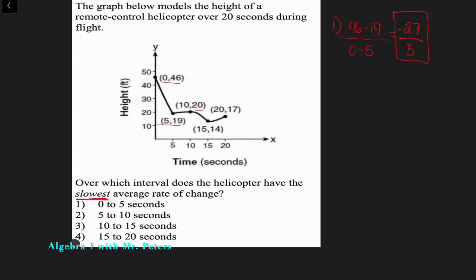Then we go from five to ten seconds. So now we have twenty minus nineteen all over ten minus five. So this is going to give us a positive fraction of one over five. Remember, they're asking us for the slowest average rate of change.